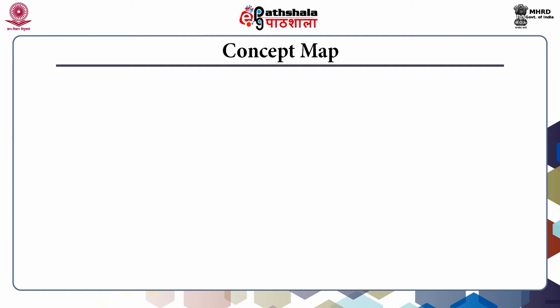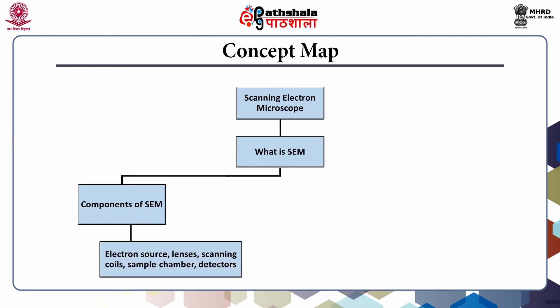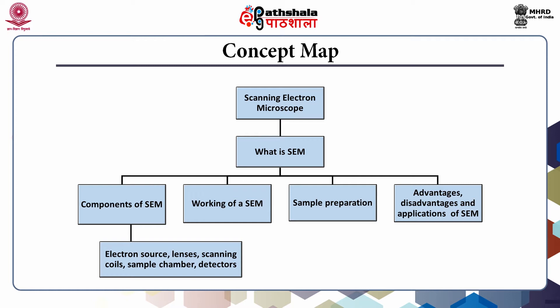This flow diagram shows the concept map that will be followed during this lecture. We will first study the working principle of scanning electron microscopy and the various components, which include electron source, lenses, scanning coils, sample chamber and detectors. We will then cover the various steps involved in working of the scanning electron microscope, and sample preparation techniques. Lastly, advantages, drawbacks and various applications of scanning electron microscope will be outlined.